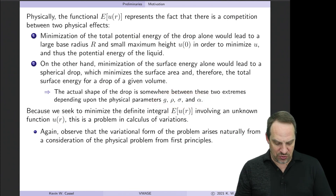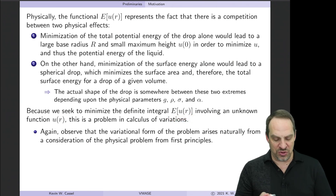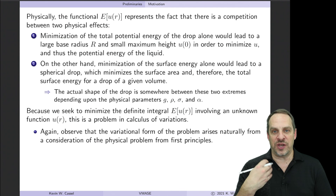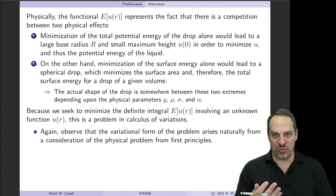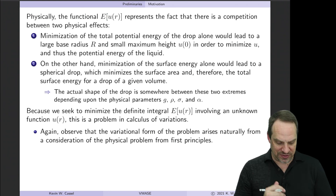Once again, we now have a problem in the calculus of variations. We want to determine U as a function of R — our dependent variable — that minimizes our functional, the total energy of the drop. If I knew the shape of the liquid drop, I could evaluate E and determine that energy, but I don't know U. I want to determine the U(R) that minimizes the total energy.